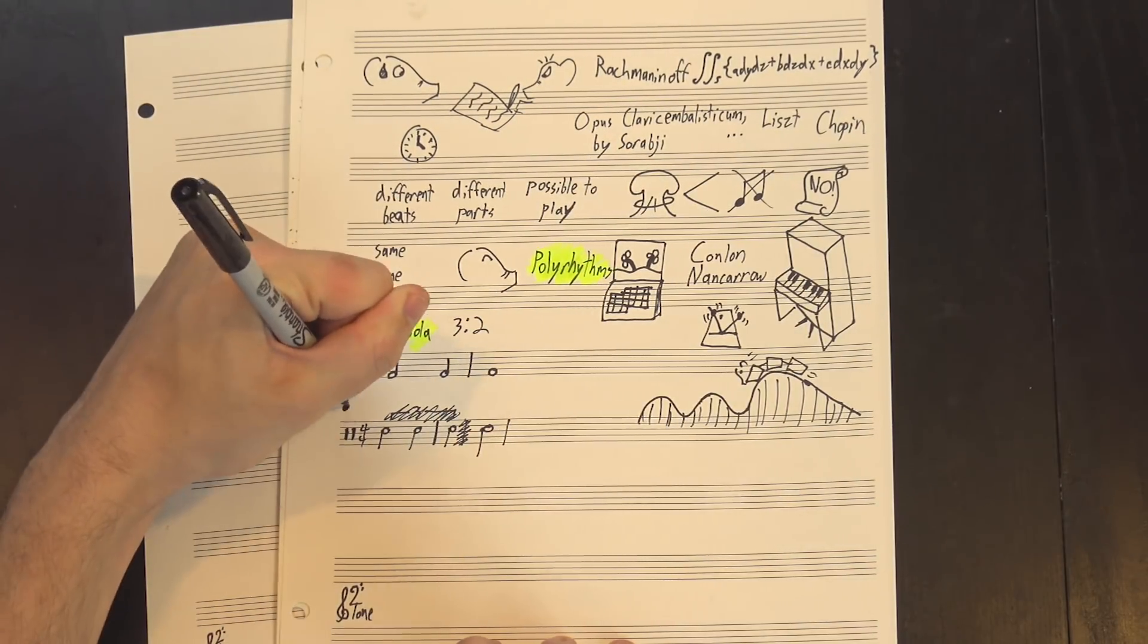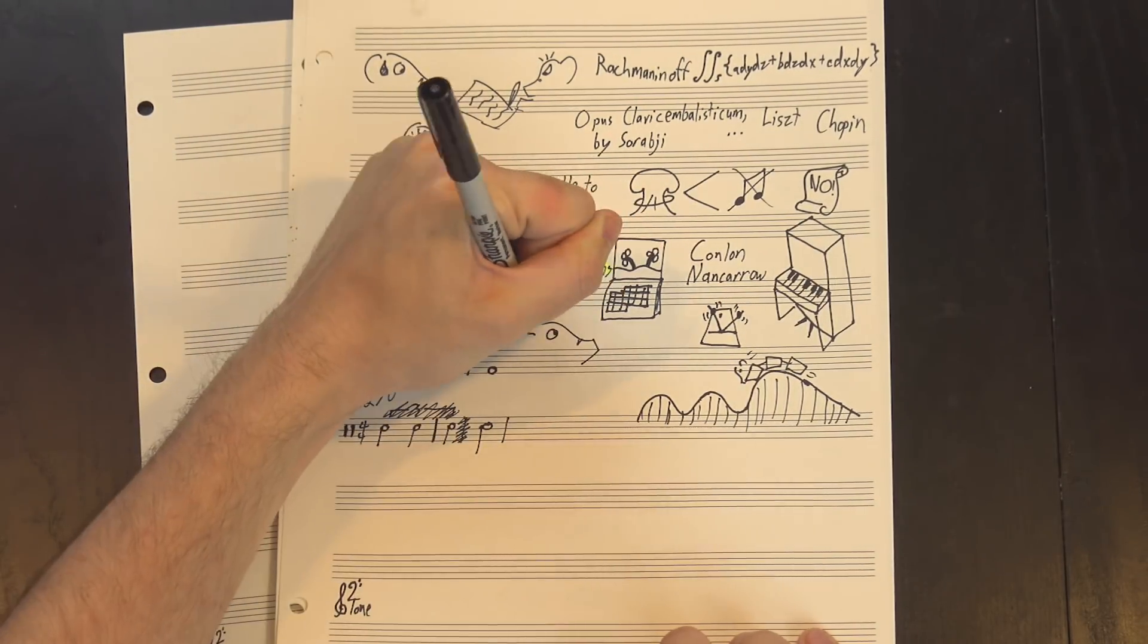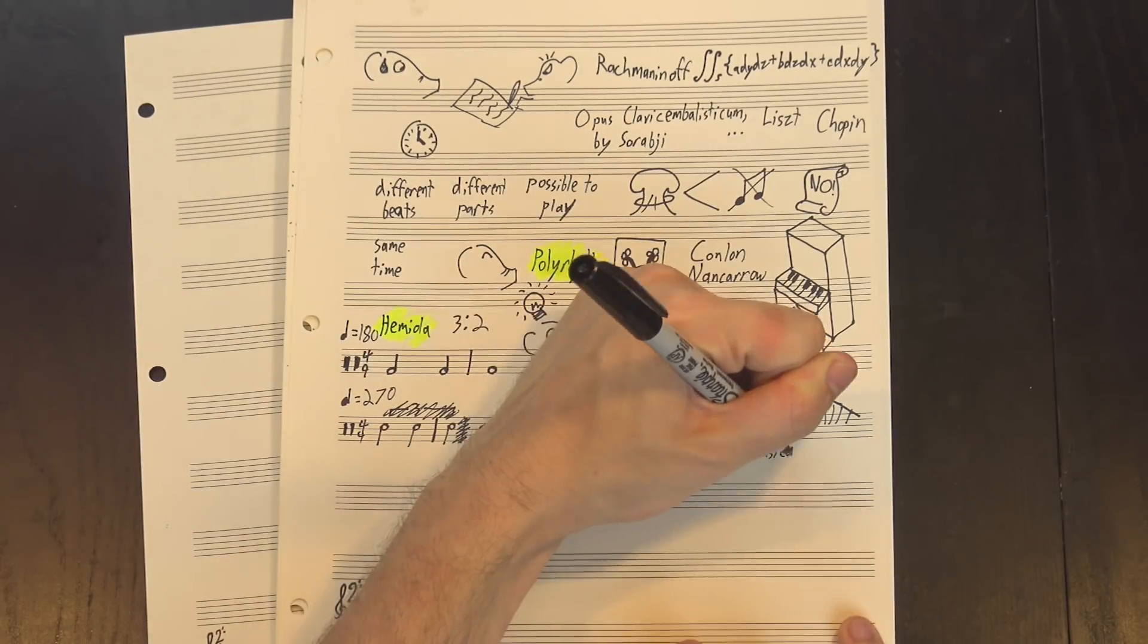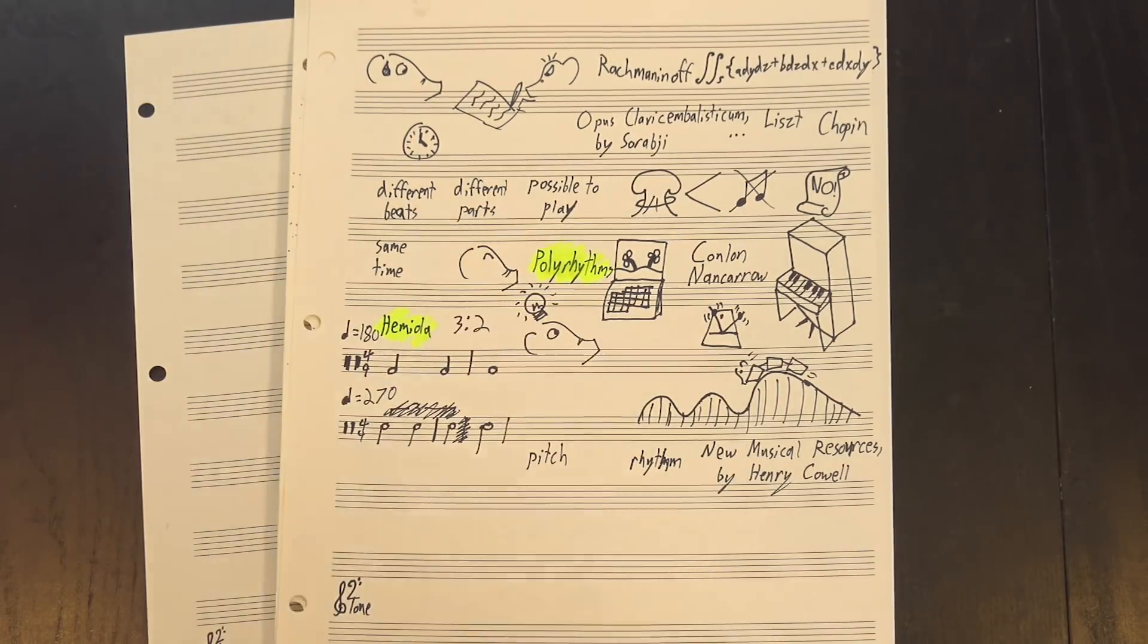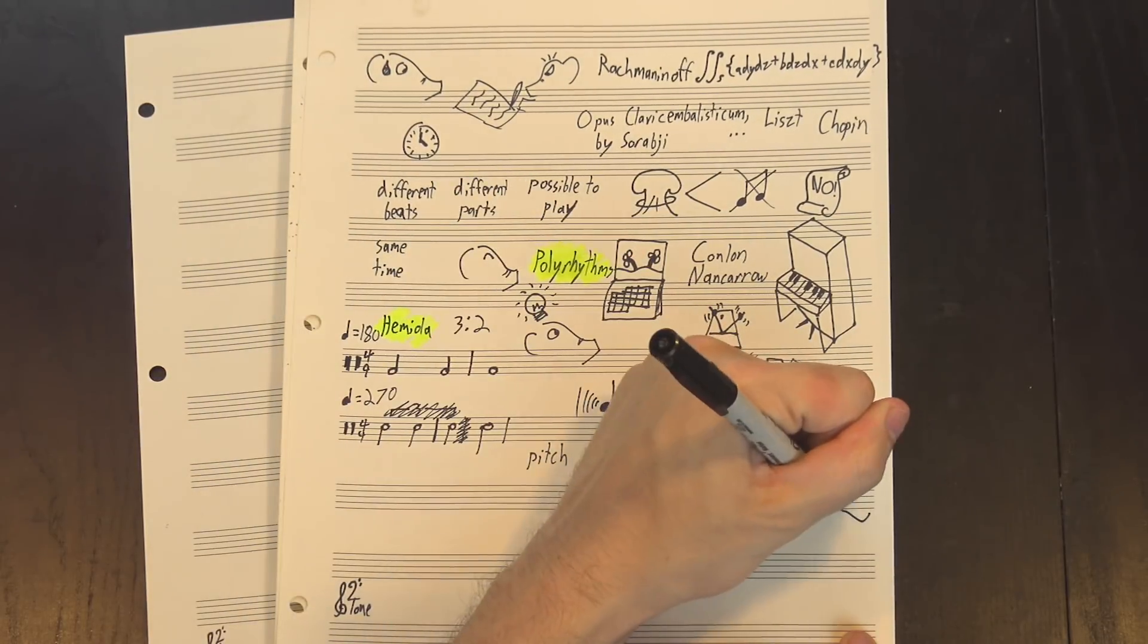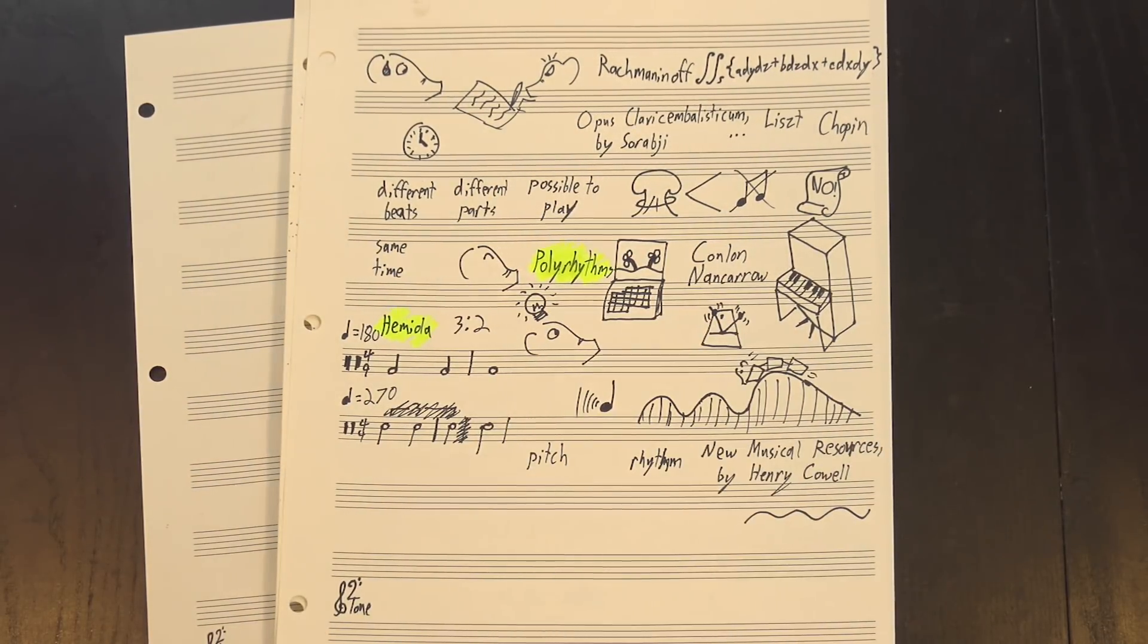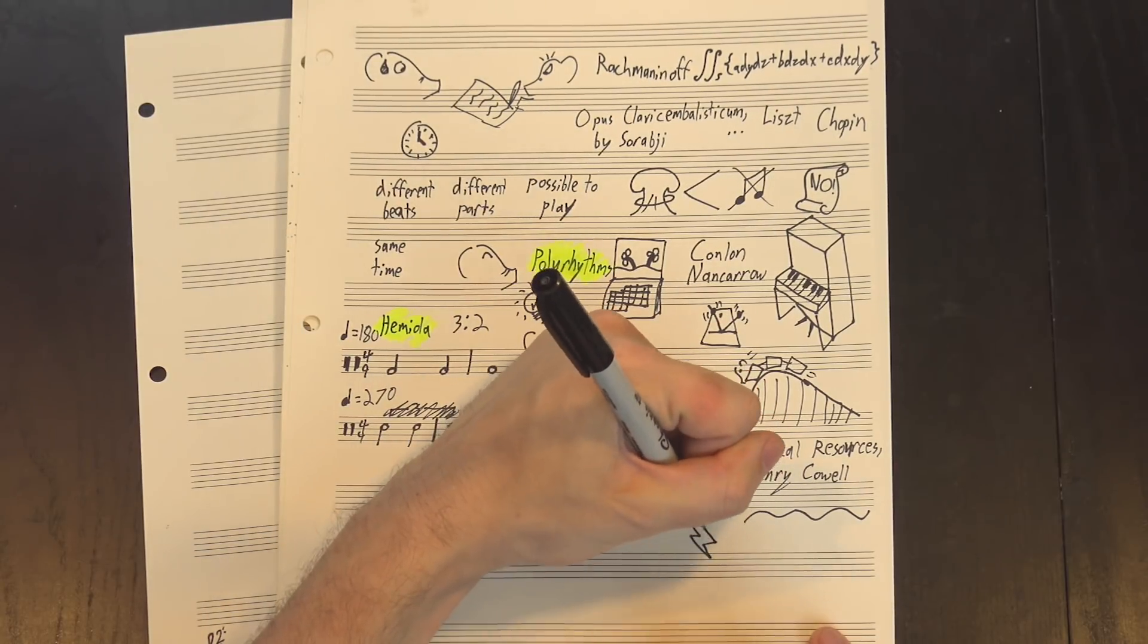Nancarrow's interest in this was inspired in part by a book called New Musical Resources by Henry Cowell. Cowell was interested in the relationship between rhythm and pitch. After all, a note is just a sound wave with a specific frequency, and in a sense, a frequency is just a really, really fast tempo.